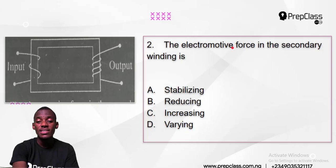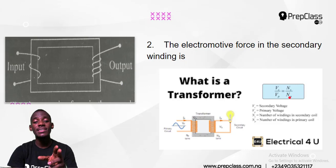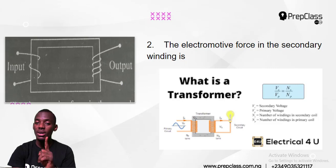You just have to look at the transformer formula: VS over VP equals NS over NP. That means whenever the windings increase, the EMF will also increase. The answer to that question is simply 'increase.' Once you know this, you will understand quite a lot about transformers. The transformer formula is VS over VP equals NS over NP.